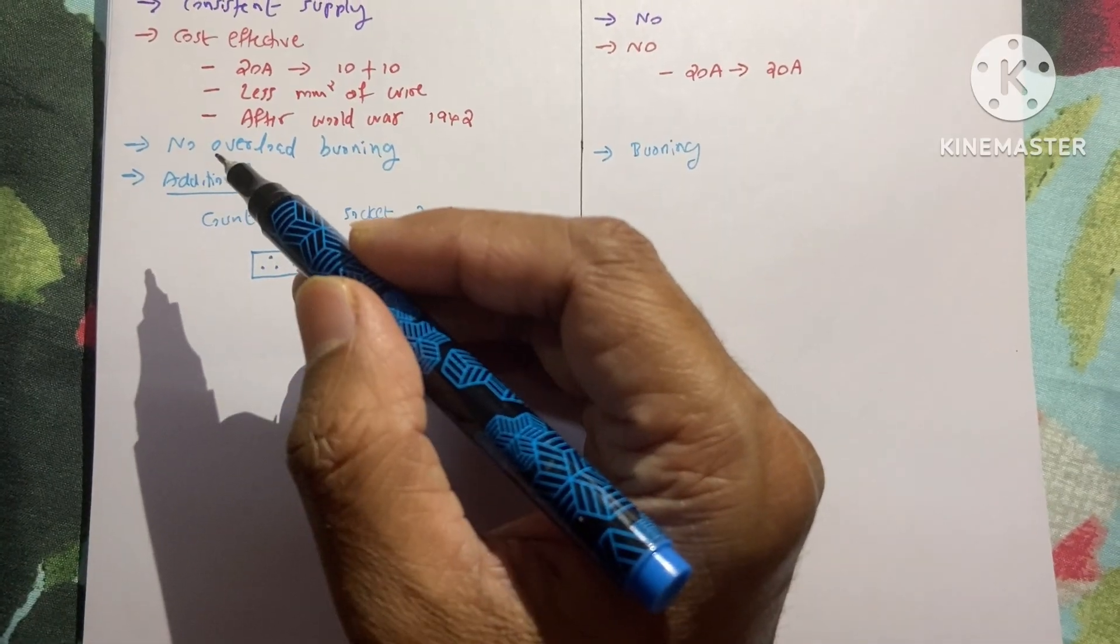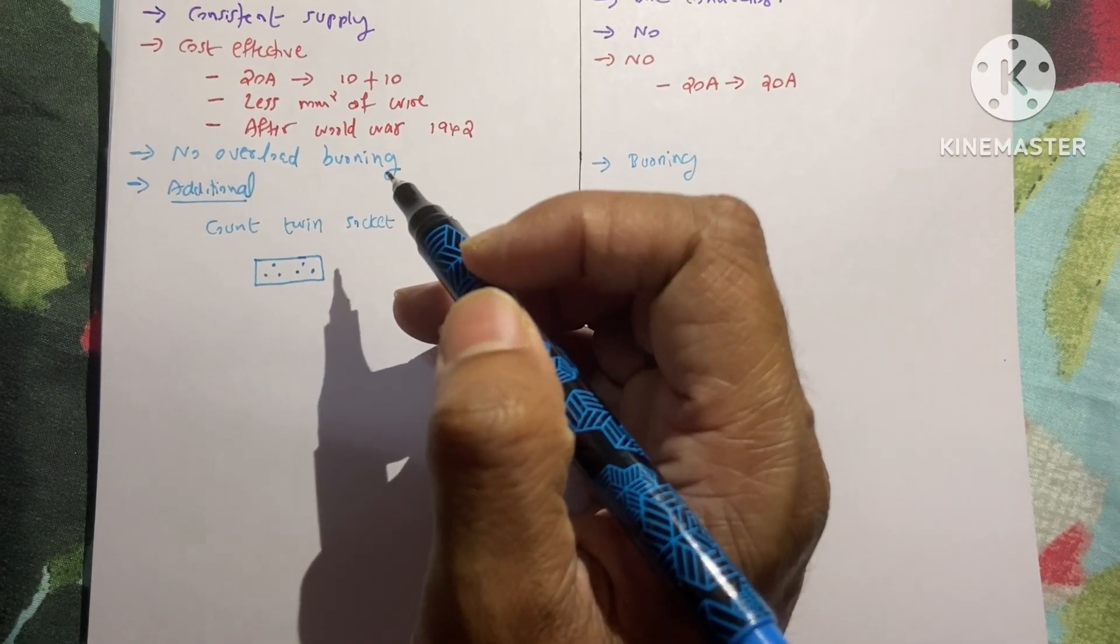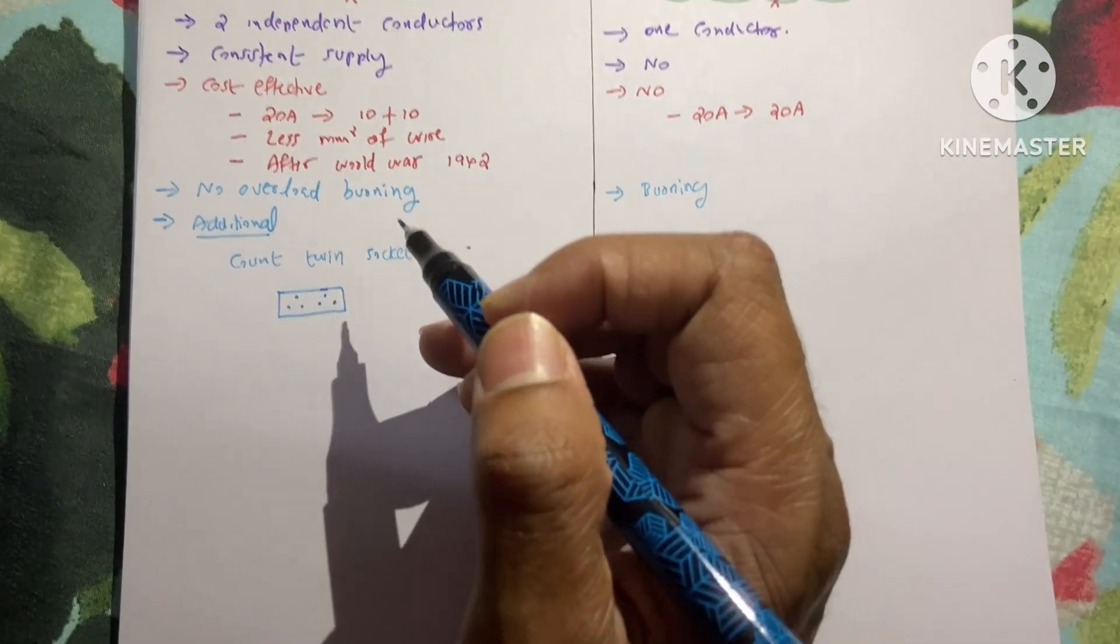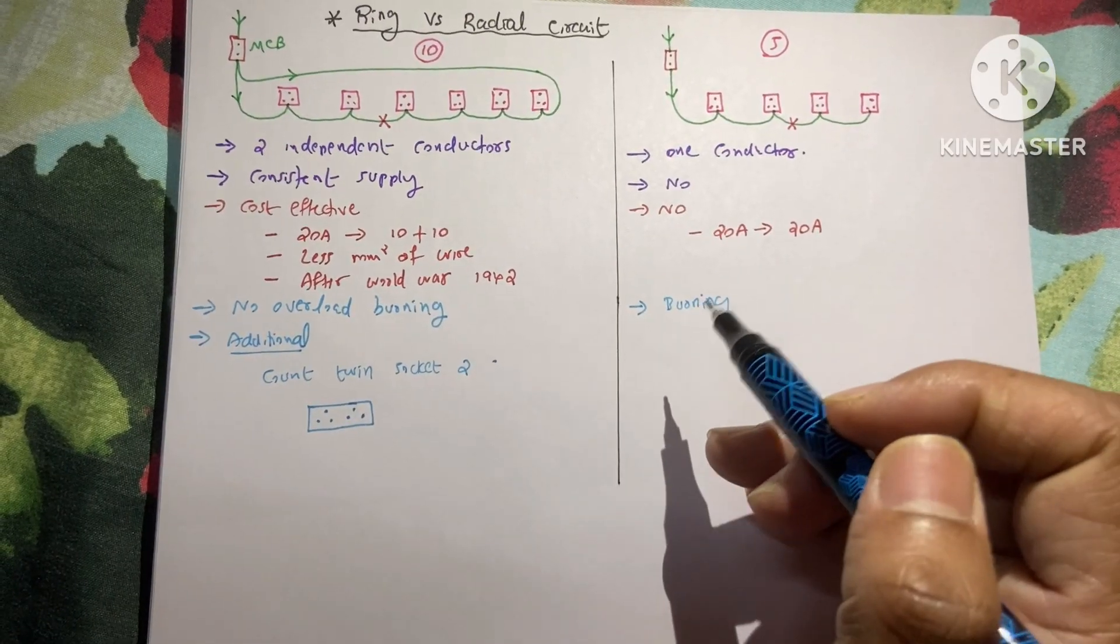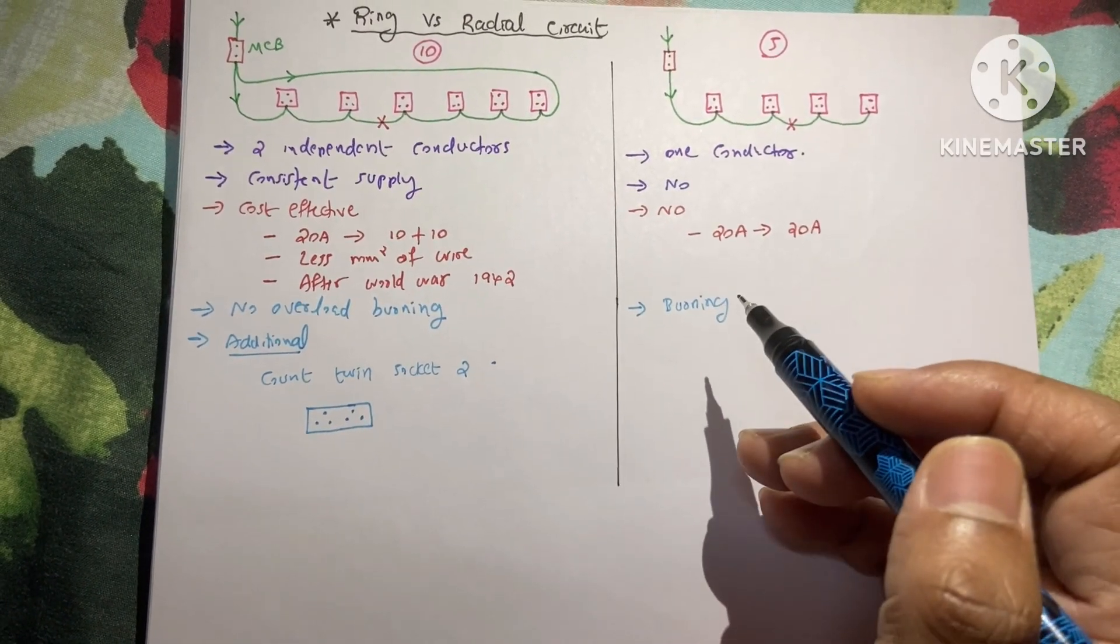And next, no overload burning occurs in ring circuit, but in the radial circuit the burning may occur.